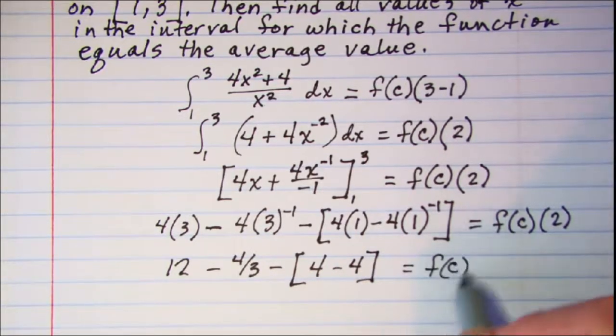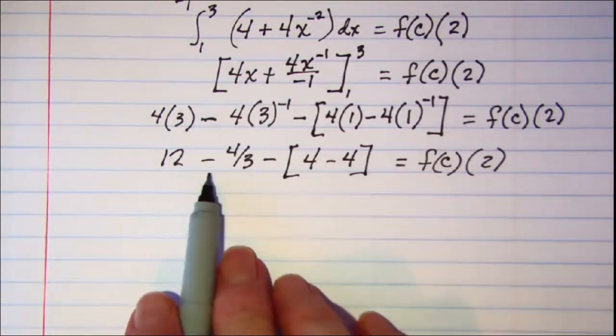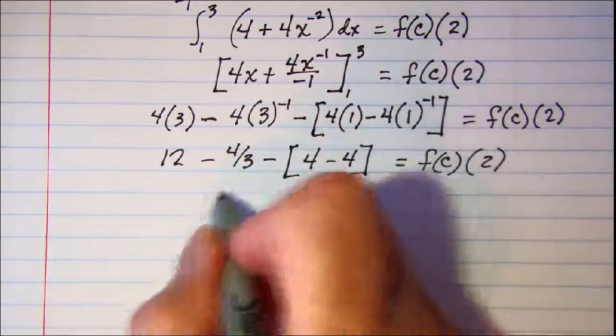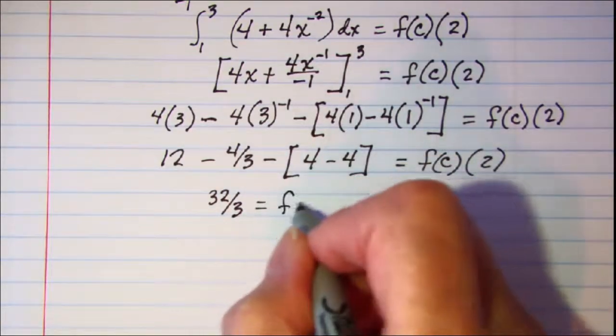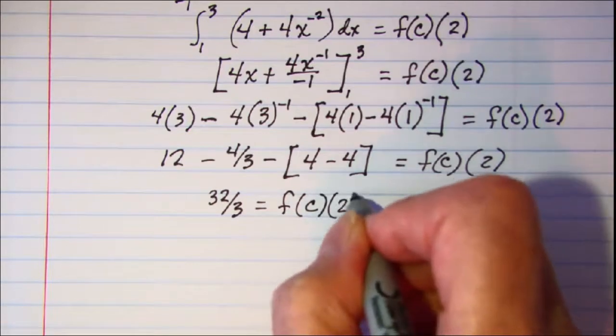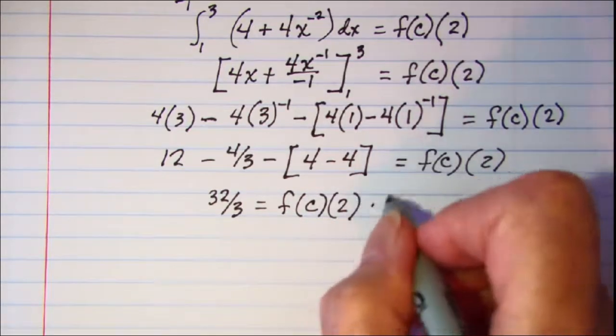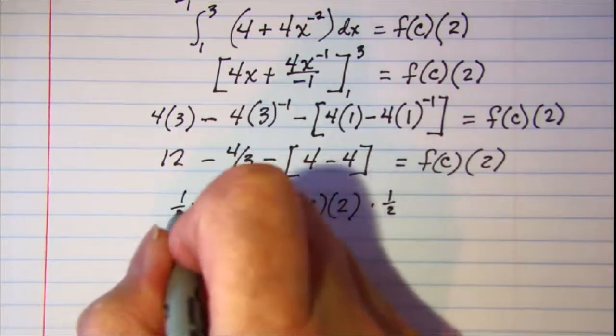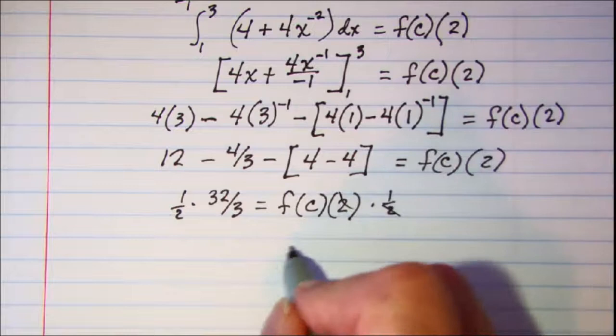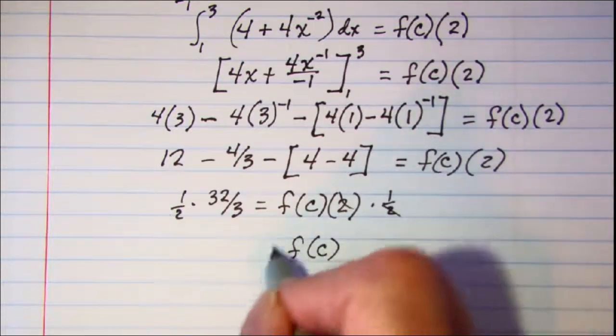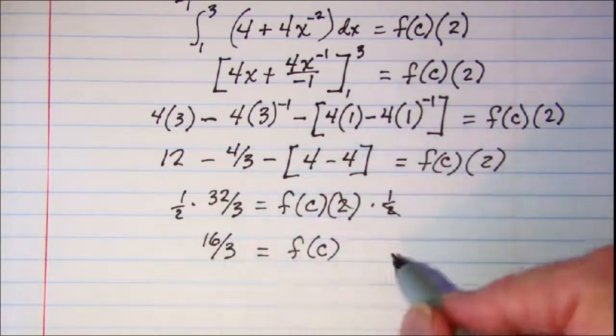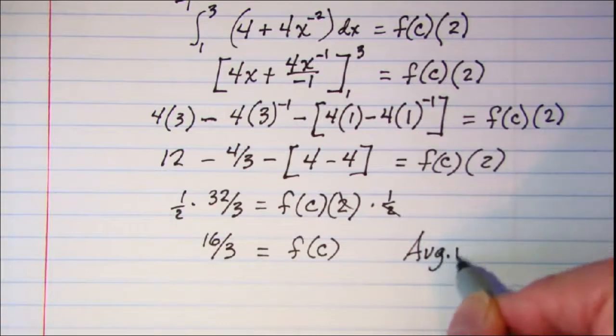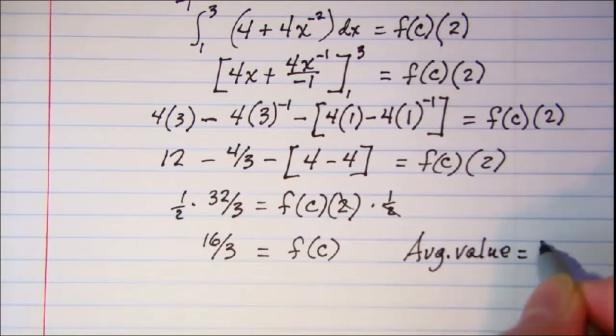This is 12 subtract 4 thirds subtract 4 minus 4. Copy the right side. So we have 0 here, 12 minus 4 thirds is 32 thirds is equal to f of c times 2. Divide both sides by 2 or multiply by 1 half and this will cancel here and I get f of c is equal to 16 thirds. So my average value is 16 thirds.